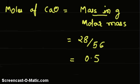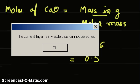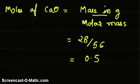Now going back to our ratio, 0.5 moles of calcium oxide would produce the same amount, the same number of moles of calcium carbonate.